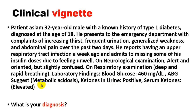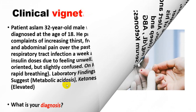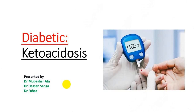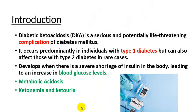What will be your diagnosis? It is more certain that our clinical diagnosis is diabetic ketoacidosis. Diabetic ketoacidosis is a serious, potentially life-threatening complication of diabetes, and it is more common in type 1 diabetes, but it can also occur in type 2 diabetes in rare cases.